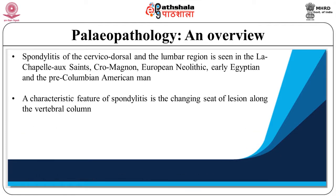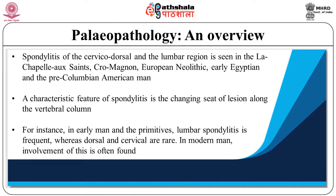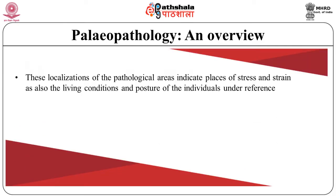A characteristic feature of spondylitis is the changing seat of the lesion along the vertebral column. For instance, in early and primitive men, lumbar spondylitis is frequent whereas dorsal and cervical are rare. In modern men, involvement of the latter is often found. These localizations of pathological areas indicate the places of stress and strain, and also reflect the living conditions and posture of the individual under reference.